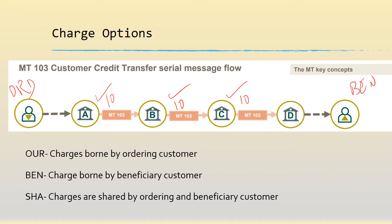OUR means all 30 USD charges are borne by the ordering customer. BEN means the beneficiary customer bears all the charges, so all 30 USD are debited from the beneficiary. SHA is shared — for example, the 10 USD is taken by the ordering customer, whereas the beneficiary takes the hit of the remaining 20 USD.